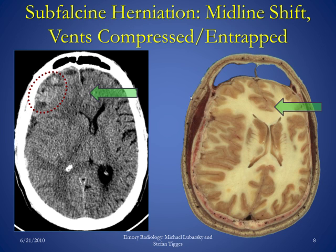On this slide, we can see an example of subfalcine herniation and midline shift. On the CT scan image on the left, there is a hemorrhage between the skull and the brain, pushing the brain to the left. We can see the falx here, which is rarely displaced, as it is a relatively rigid structure. The path of least resistance is subfalcine — meaning posterior to the falx — causing herniation of the brain. Everything gets displaced to the side.